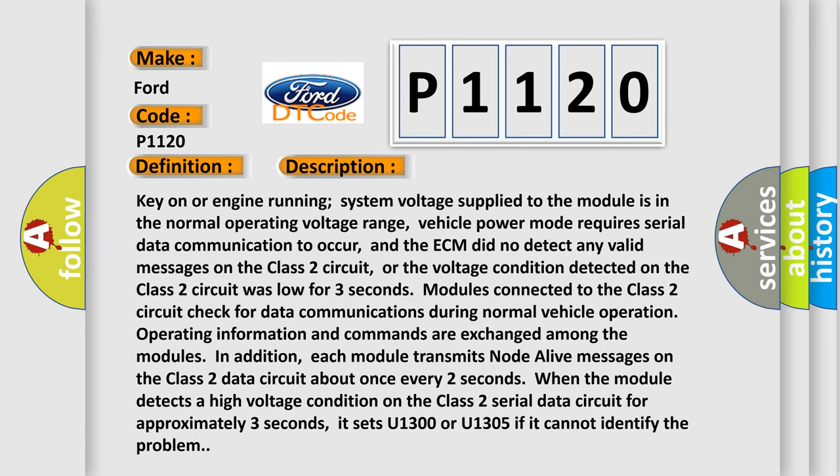Key on or engine running, system voltage supplied to the module is in the normal operating voltage range. Vehicle power mode requires serial data communication to occur, and the ECM did not detect any valid messages on the class 2 circuit. Or the voltage condition detected on the class 2 circuit was low for 3 seconds.